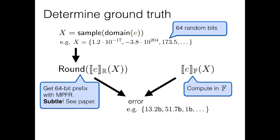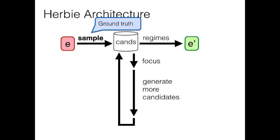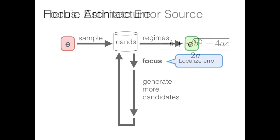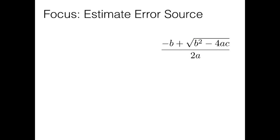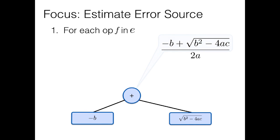So to do that, we're going to need some candidate programs. So let me talk about how we get those. The first step is to localize the error, to find individual operators that contribute the most to the error of the program as a whole. That's going to proceed in several steps.